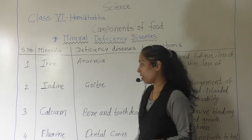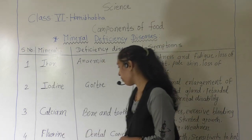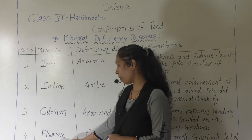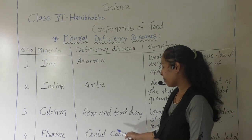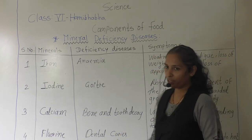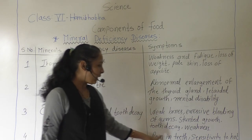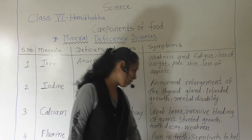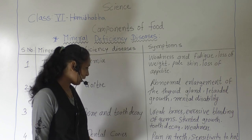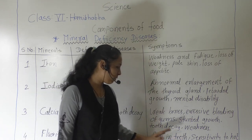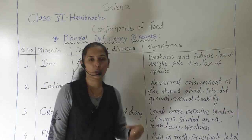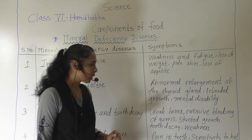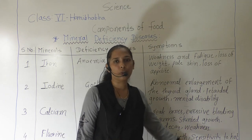The last mineral we will discuss is fluorine. The deficiency of fluorine causes the deficiency disease dental cavities. This is because of the lack of fluorine in the body. The symptoms for dental cavities are: pain in the teeth — there is a large amount of pain in the teeth — and sensitivity to hot and cold food or drinks.